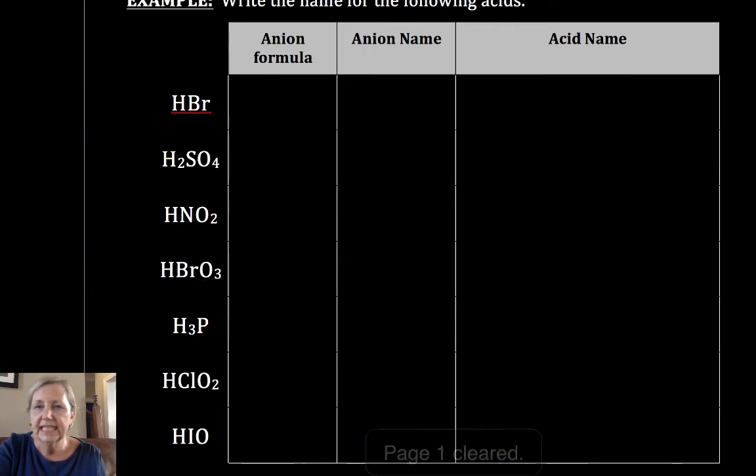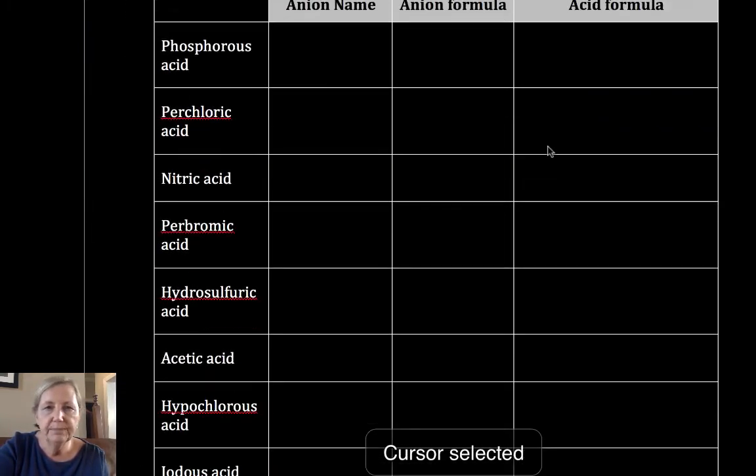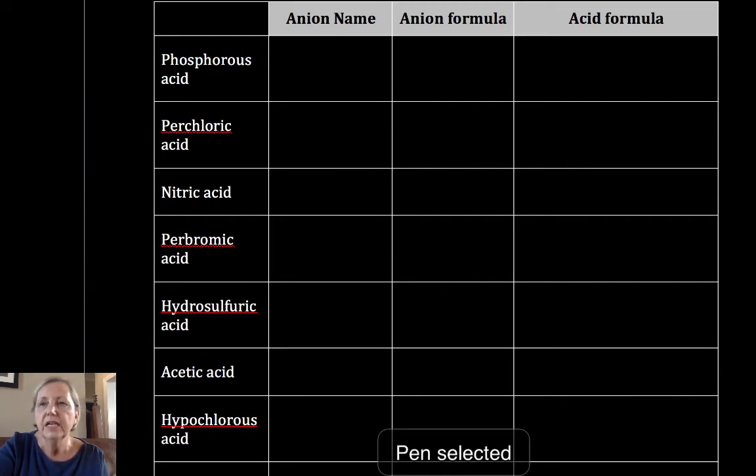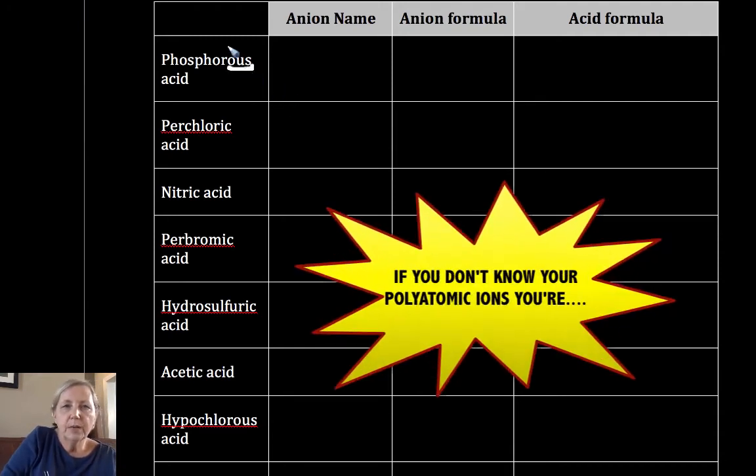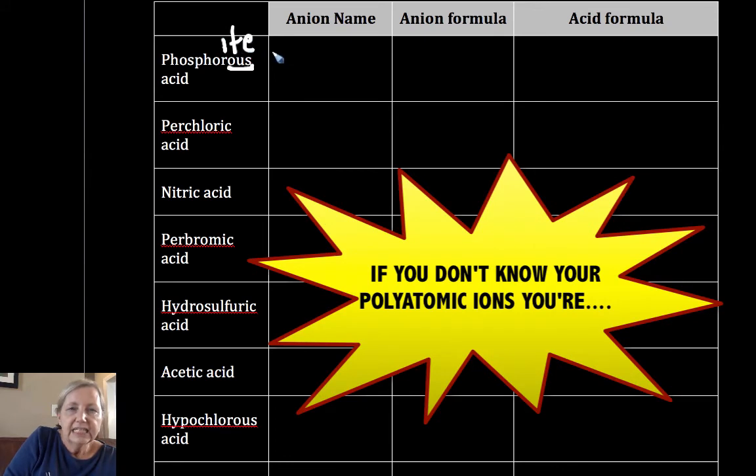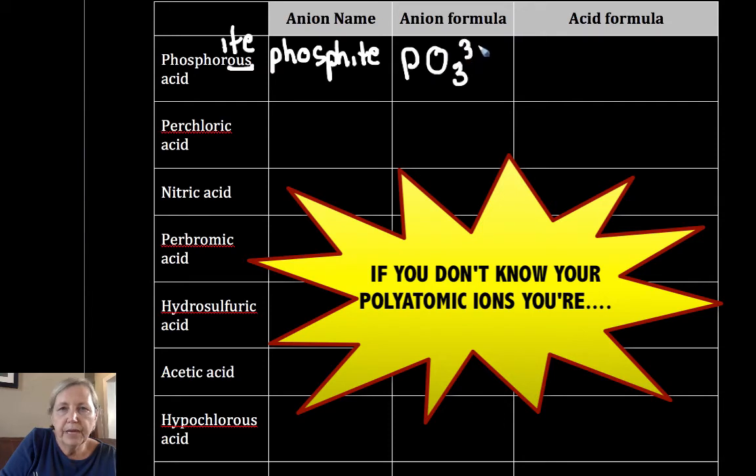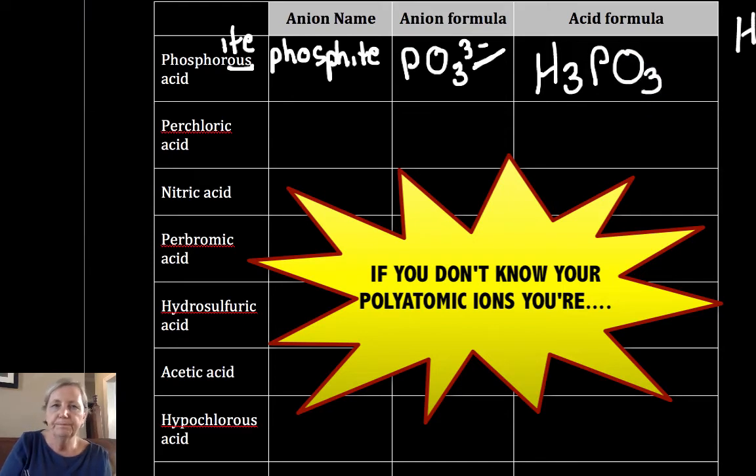So now let's go in the opposite direction. How do you get the acid formula from the acid name? If I've got phosphorous acid, -ous must have come from -ite. So I must have the phosphite ion. Phosphite is PO3 3-. That's my anion. My cation in every case is H+. So I need three positives to balance out those three negatives. So it's H3PO3.